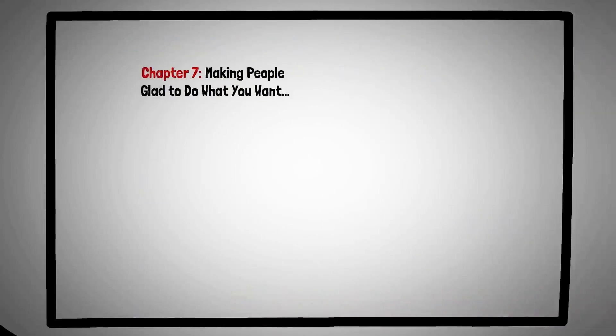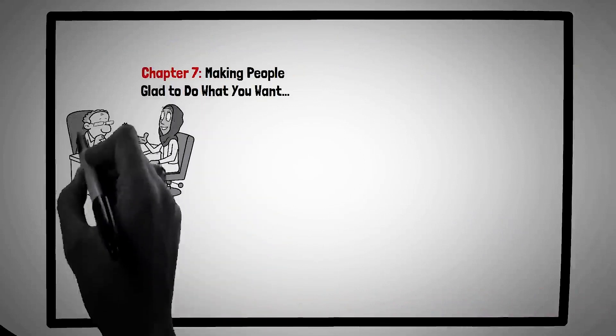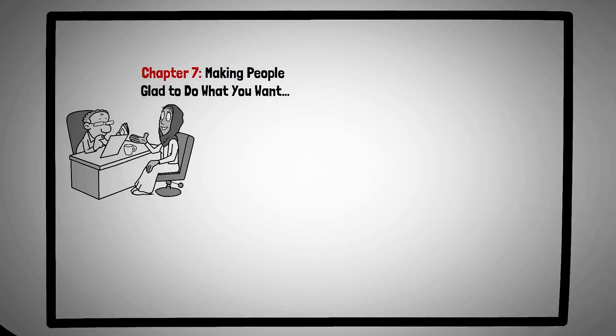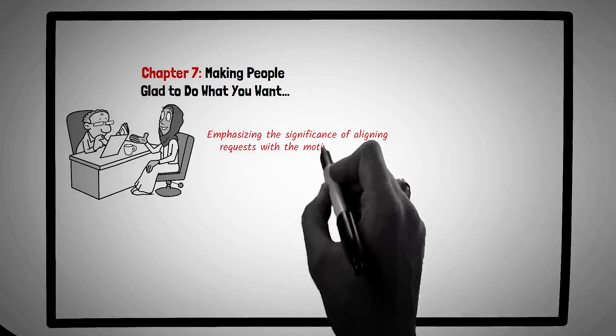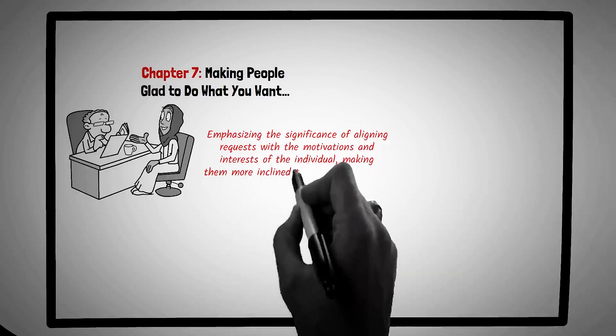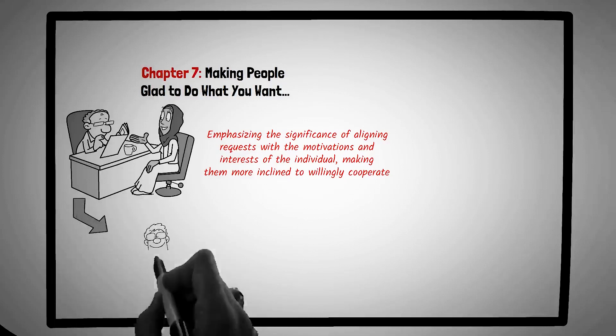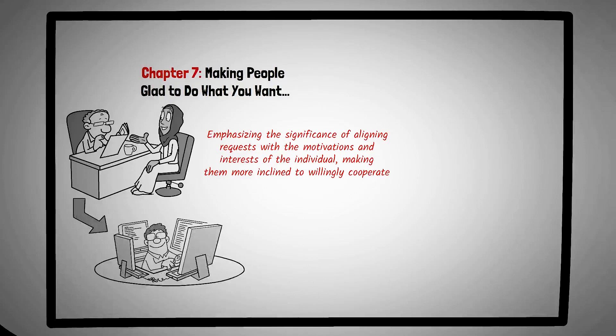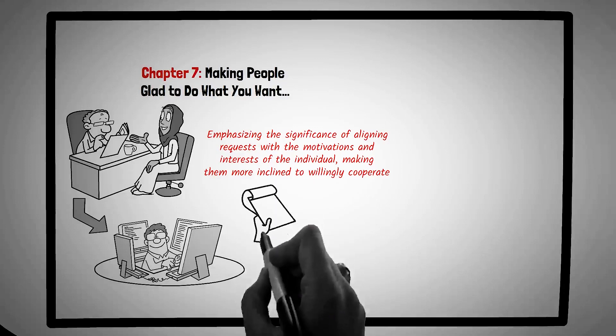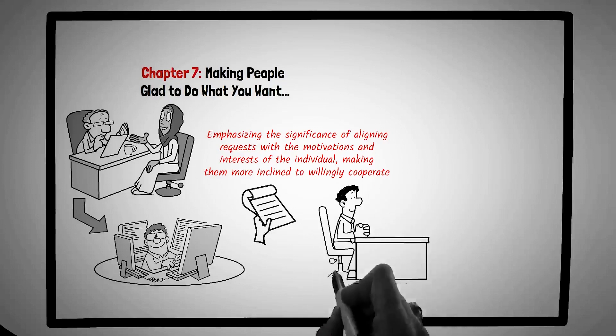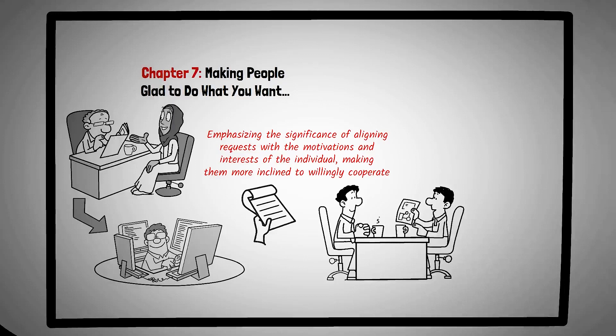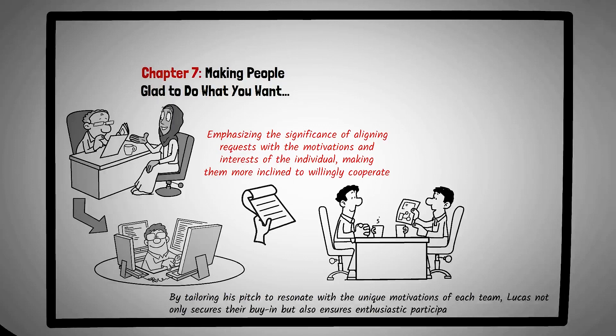Chapter seven, making people glad to do what you want. In the realm of influence and persuasion, understanding the desires and values of others is paramount. This chapter delves into this principle, emphasizing the significance of aligning requests with the motivations and interests of the individual, making them more inclined to willingly cooperate. Picture Lucas, a project manager at a software company. He's tasked with implementing a new software tool that requires the collaboration of various departments. Instead of merely assigning tasks, Lucas takes the time to understand the goals and challenges of each department. When approaching the sales team, he highlights how the tool can streamline their processes and help them achieve their targets faster. For the design team, he emphasizes the tool's capability to enhance creativity and collaboration. By tailoring his pitch to resonate with the unique motivations of each team, Lucas not only secures their buy-in but also ensures enthusiastic participation in the project.